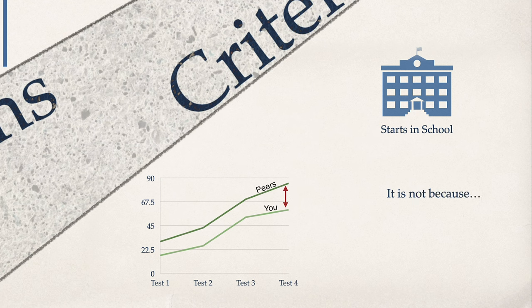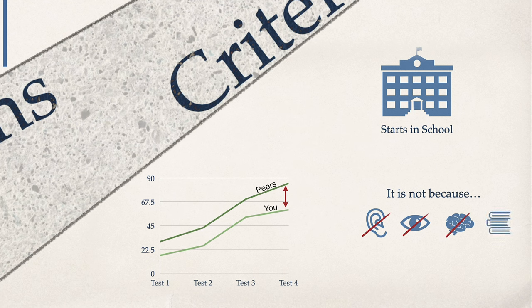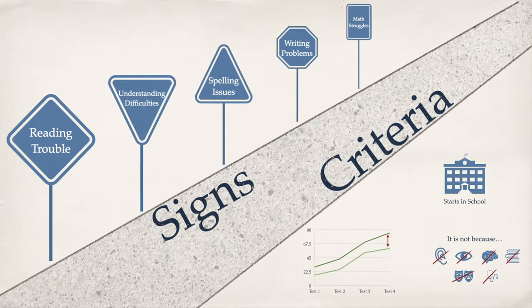The last criteria states that we need to make sure you're not struggling because of something else. You might not hear or see very well, and because of that have trouble with reading or writing — if that is the case, you won't be diagnosed with a specific learning disorder. If you're simply not getting a proper education, or if a different type of mental health diagnosis or tough life situation explains the struggles, then you also don't get a diagnosis.